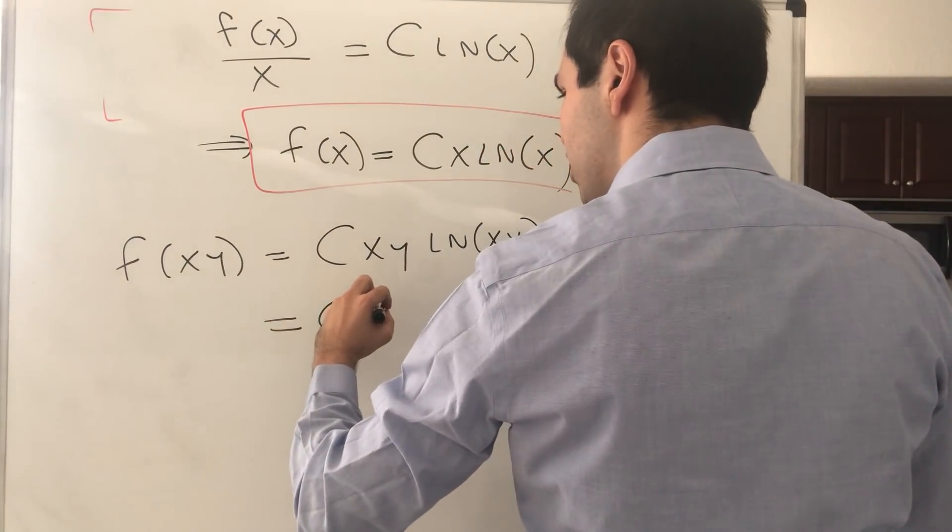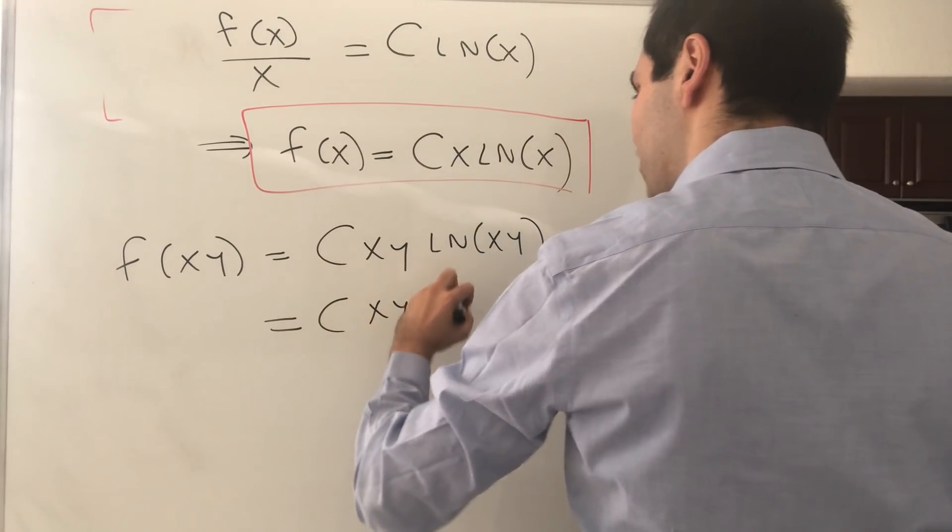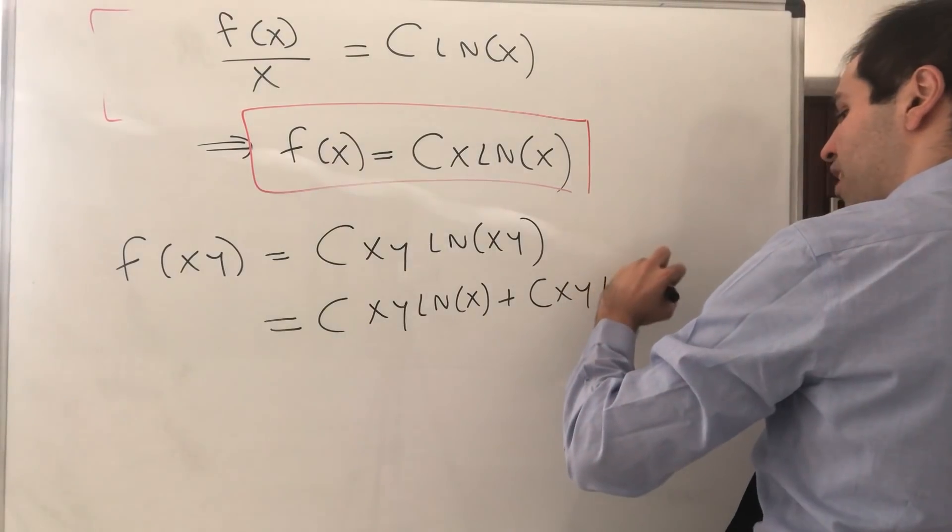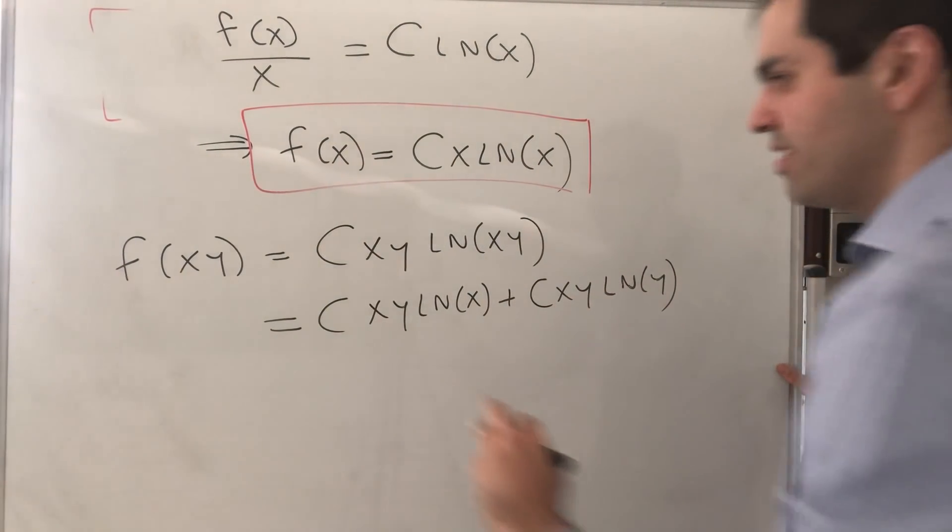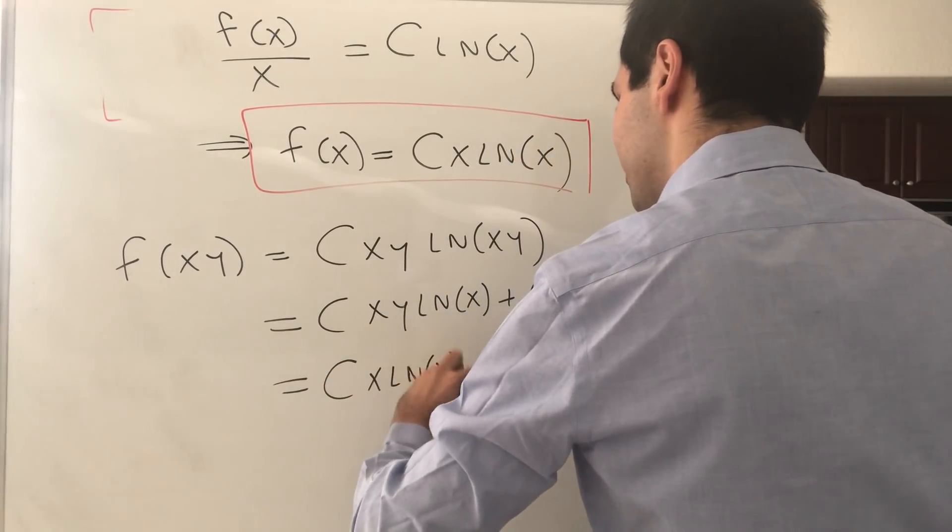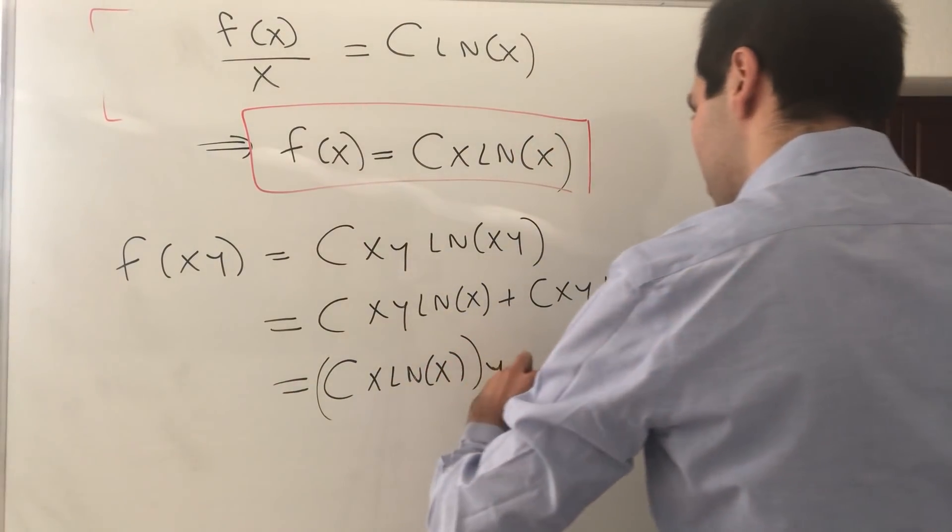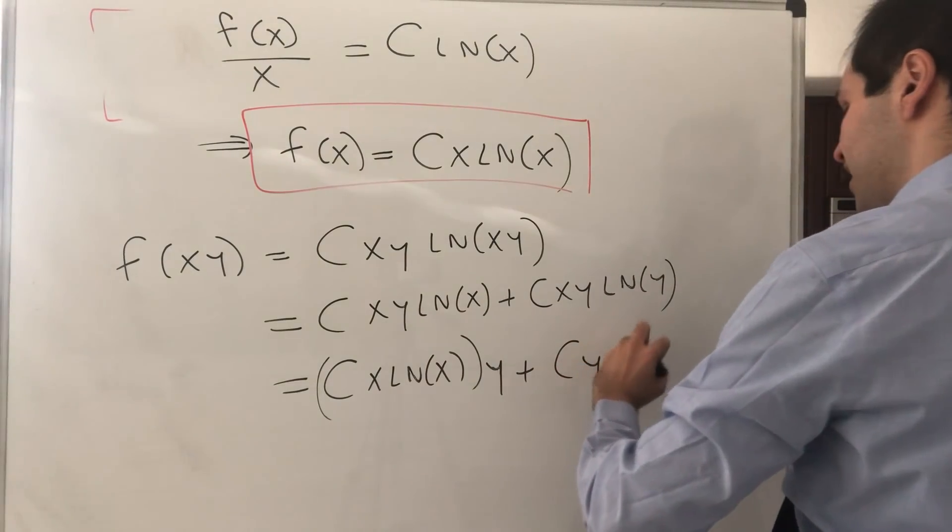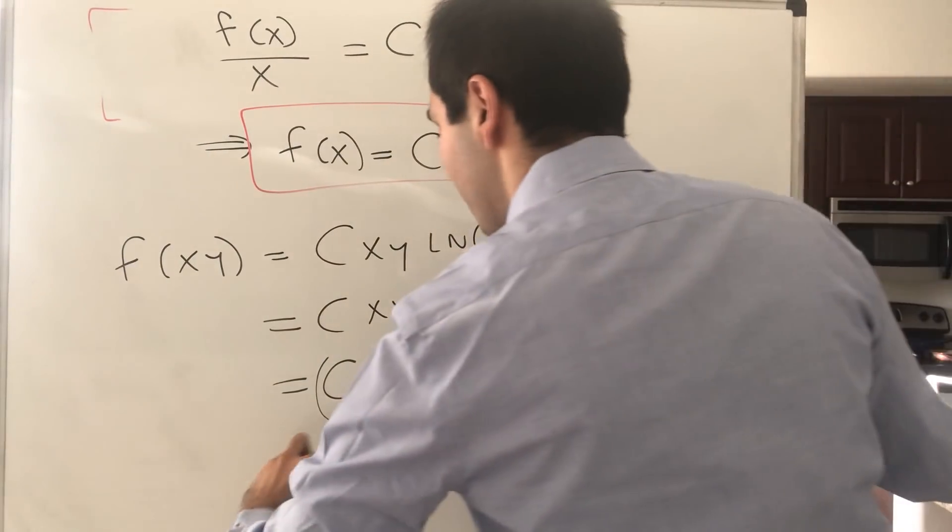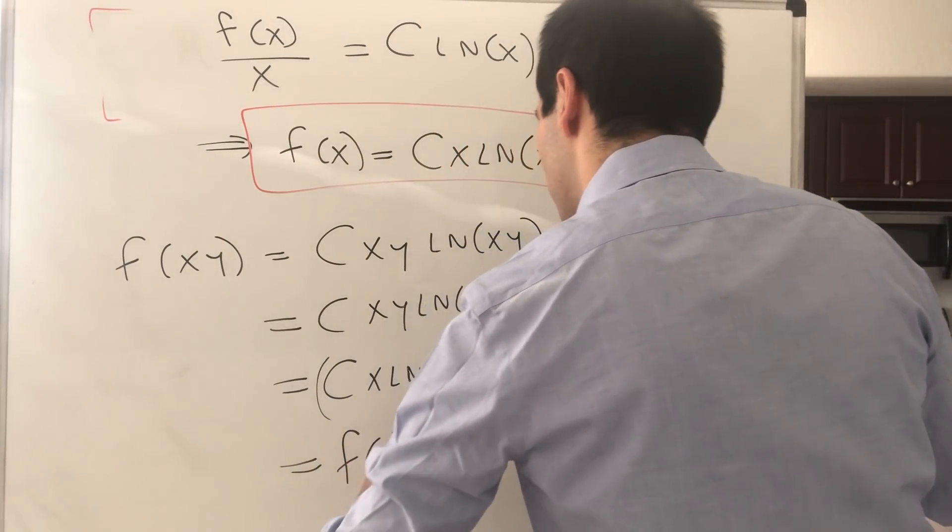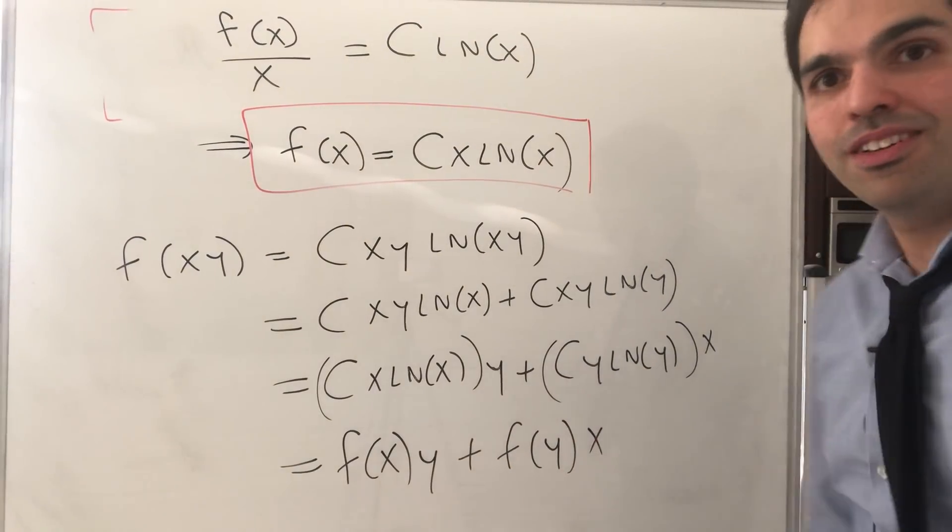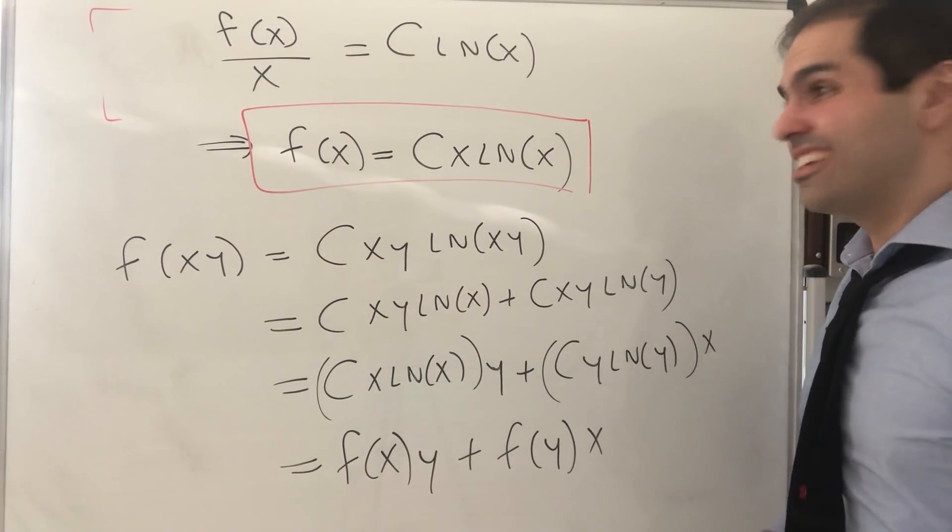And that becomes Cxy ln(x) + Cxy ln(y). But what is that? That becomes Cx ln(x) · y + Cy ln(y) · x. But that's precisely f(x) · y + f(y) · x. So that's the product rule for this function.